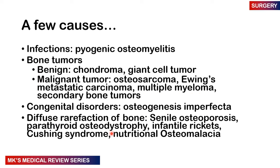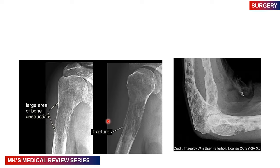Causes of pathological fractures include infections like pyogenic osteomyelitis, bone tumors — benign ones like chondromas, giant cell tumors; malignant tumors like osteosarcomas, Ewing's sarcoma, metastatic carcinomas, multiple myelomas, and secondary bone tumors. Congenital disorders like osteogenesis imperfecta, diffuse rarefaction like senile osteoporosis, parathyroid osteodystrophy, rickets, Cushing's syndrome, and nutritional osteomalacia. The image here shows a diseased bone with a large area of bone destruction and a pathological fracture.